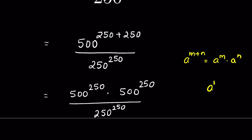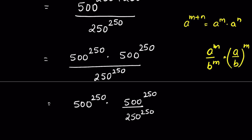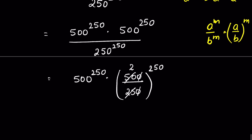Again, if a raised to the power m upon b raised to the power m, this we can write as a upon b whole raised to the power m. Therefore, here we can write 500 to the power 250 times 500 to the power 250 upon 250 to the power 250. Now the zeros get cancelled, and 25 times 2 is 50. So we have 500 to the power 250 times 2 to the power 250.